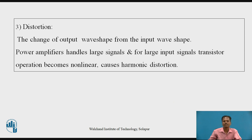Distortion: the change of the output waveform from the input waveform is known as distortion. In a power amplifier, the amplified output signal is distorted — its shape is not exactly similar to the input AC signal shape. A power amplifier handles large signals at the input and output side, and for large input signals, transistor operation becomes non-linear, causing harmonic distortion. So the amplified output waveform is not exactly the same as the input signal waveform. Distortion should be as low as possible, and the efficiency of the power amplifier should be as large as possible.